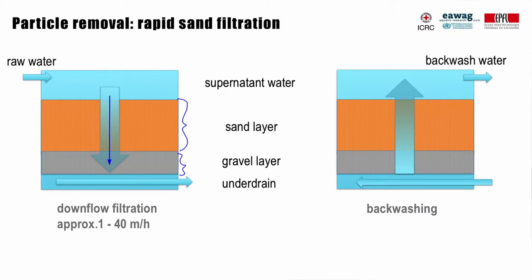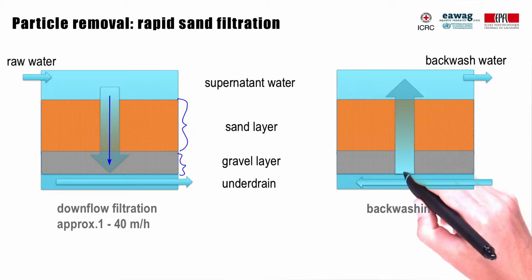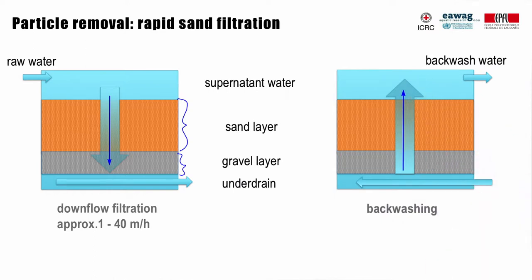After trapped material accumulates in the first layers, the filter requires backwashing — a reverse flow of water to remove accumulated material. The filters are operated at a linear velocity of 1 to 40 meters per hour, which is considerably higher than in slow sand filters, which we discuss later.